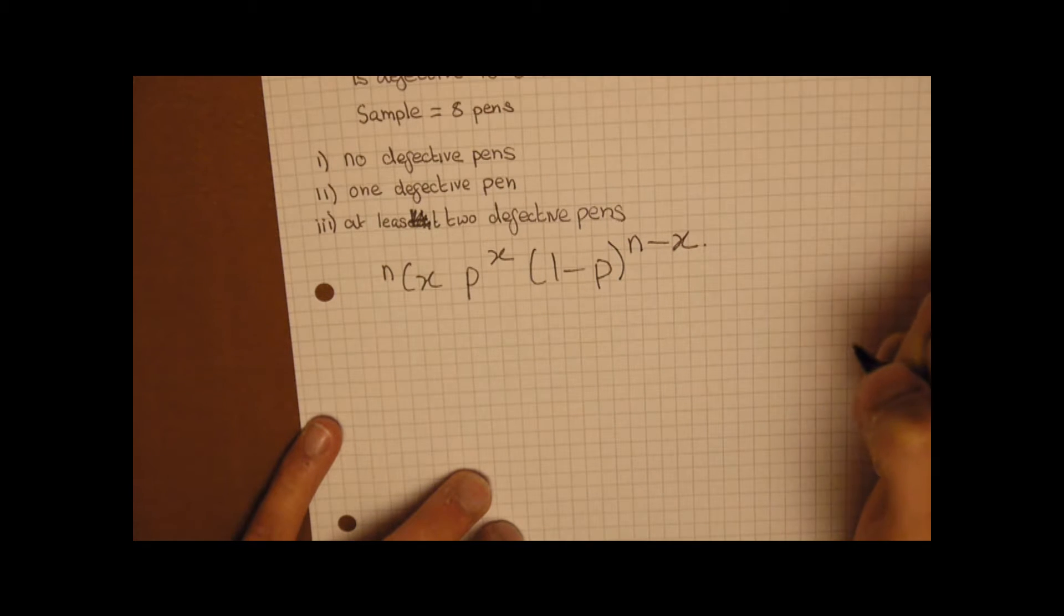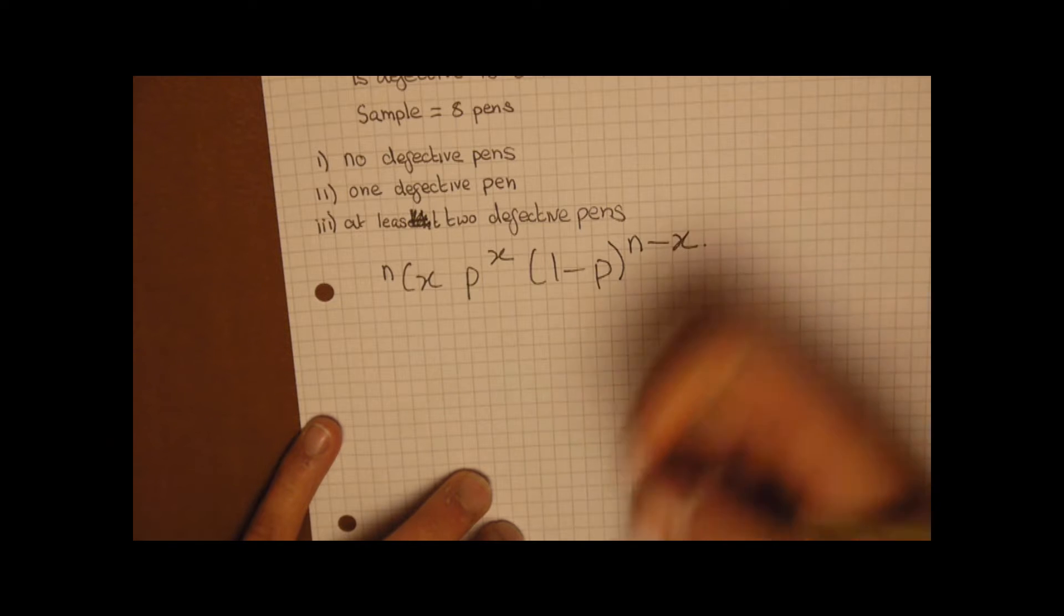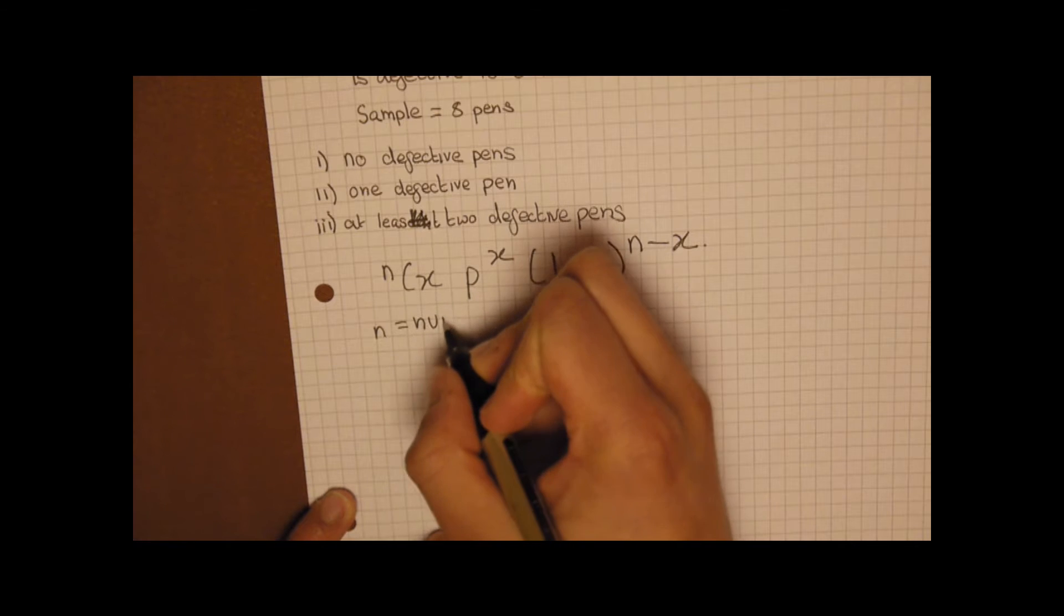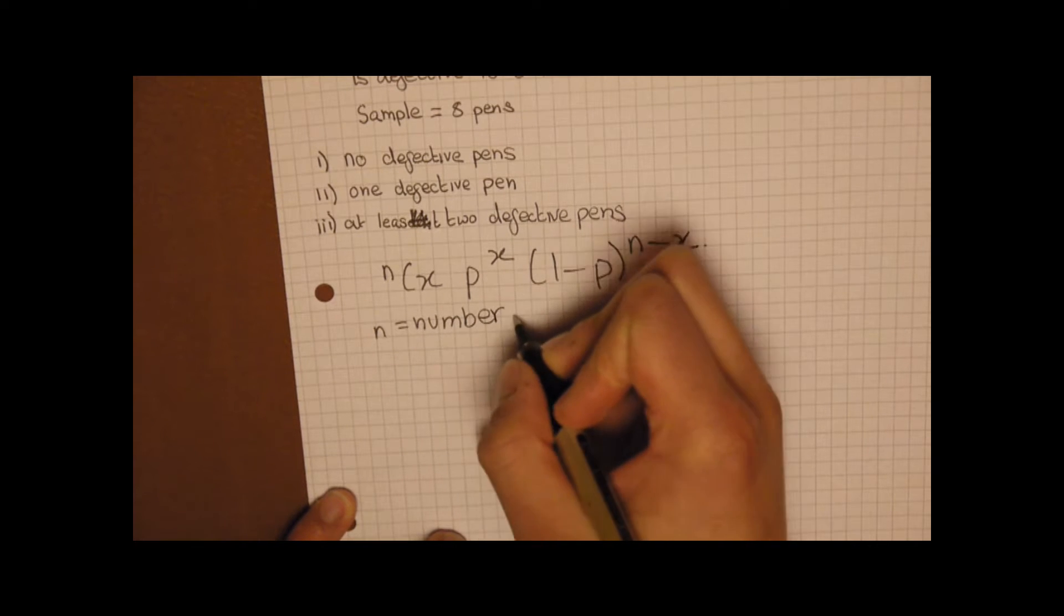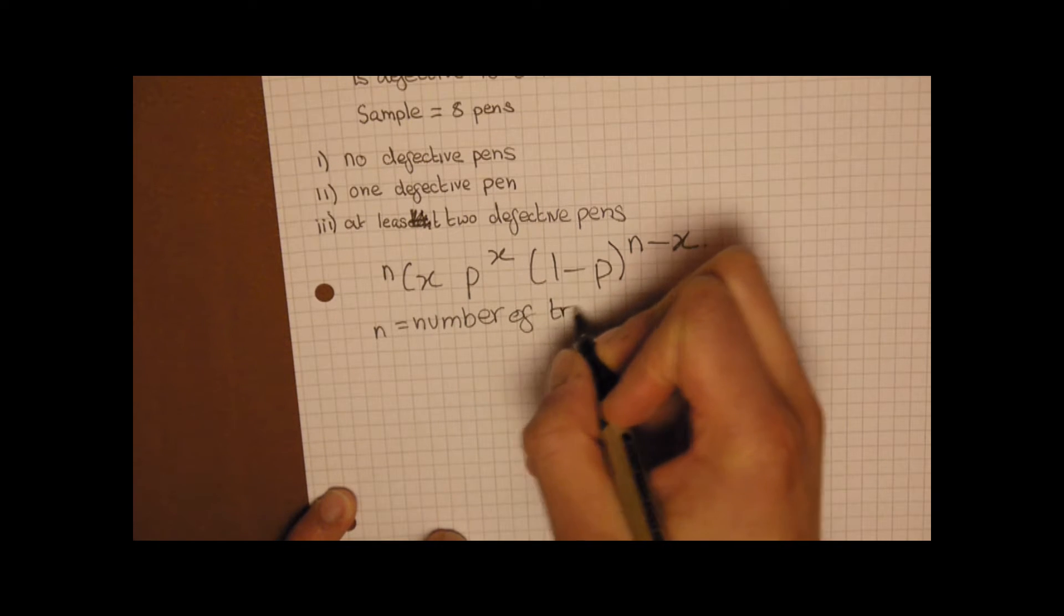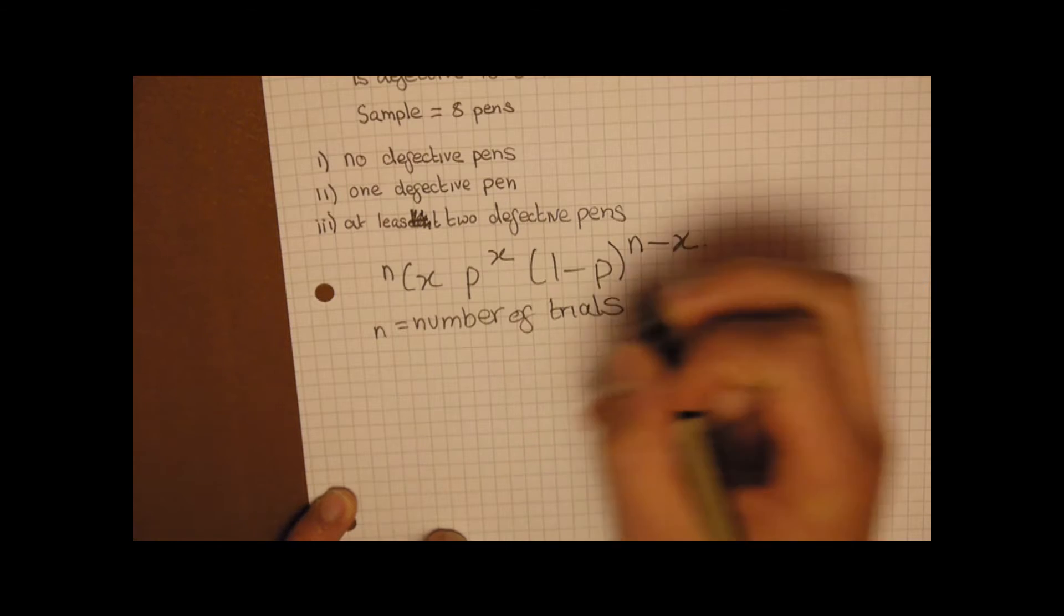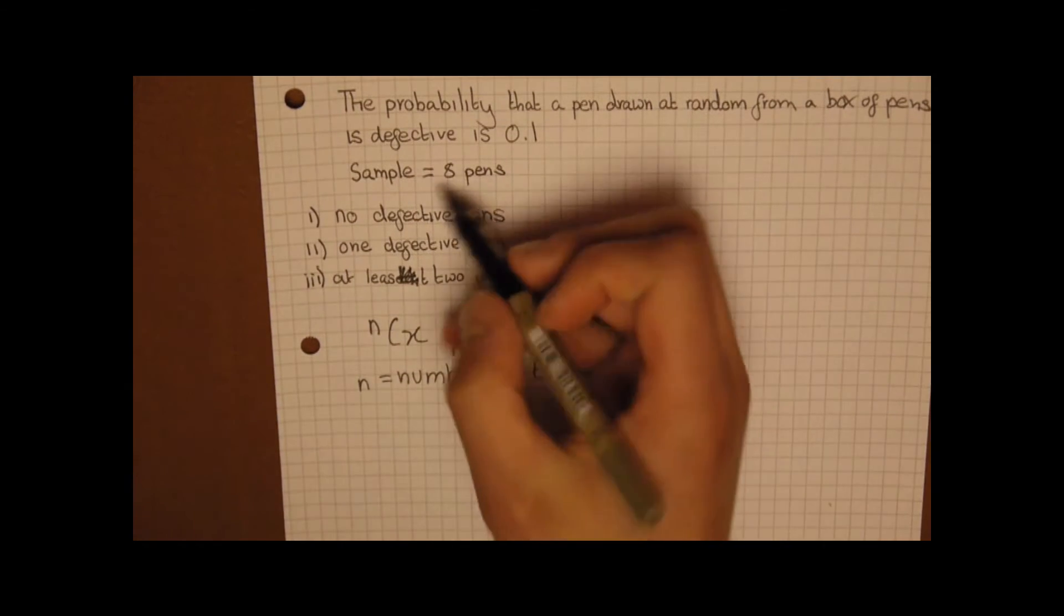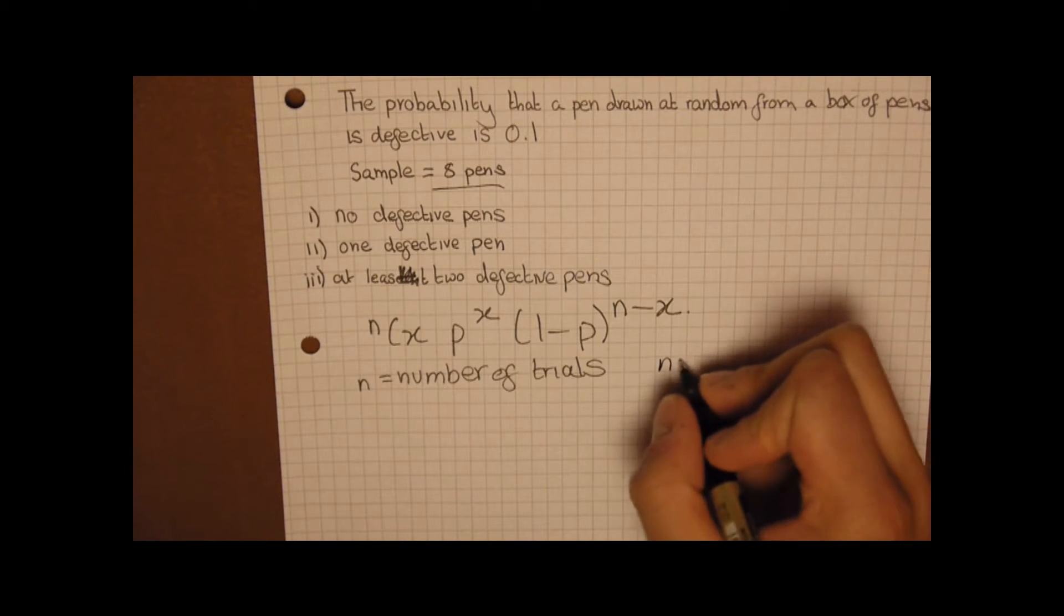You're probably thinking, well what does this actually mean? n is the number of trials. So in this case, as you can see it says sample equals 8 pens, so that would mean n equals 8.